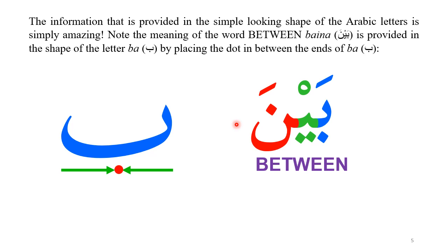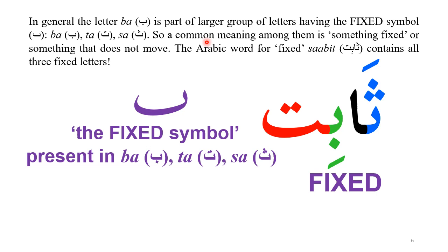It's truly amazing how Arabic letters give built-in meanings. Consider the word 'Bayna,' which means 'between.' You can see that the dot of the Ba is placed exactly between the boat-like shape. This boat-like shape is part of a larger group of letters sharing this fixed symbol — Ba, Ta, and Sa. The Arabic word 'Sabit,' which contains these letters, means 'fixed.'